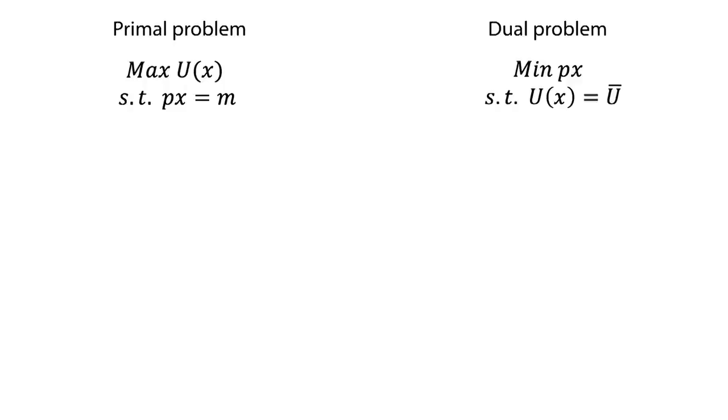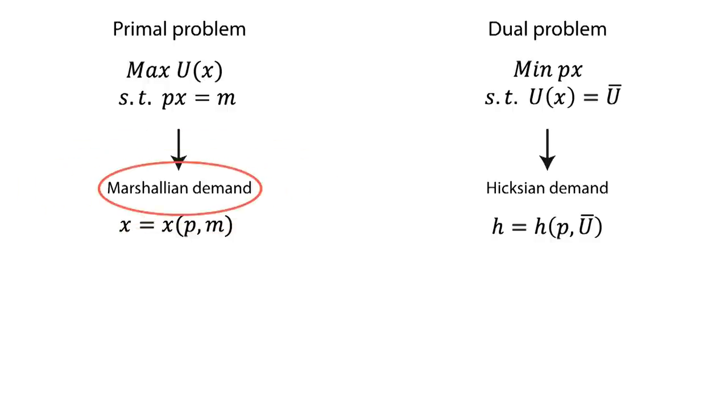The first thing to know is that by solving the primal problem or the dual problem, we end up with Marshallian or Hicksian demand functions, respectively. The primal problem solution corresponds to a Marshallian demand equation, which depends on the prices of all the goods and income. The dual problem solution corresponds to a Hicksian demand equation, which depends on the prices of all the goods and utility. These are also called compensated demand equations, since they hold utility as a constant.